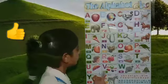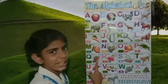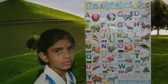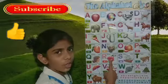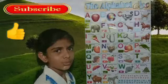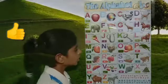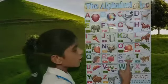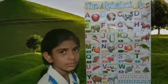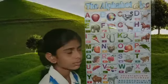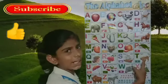U for queen, R for rose, S for sheep, T for tiger.